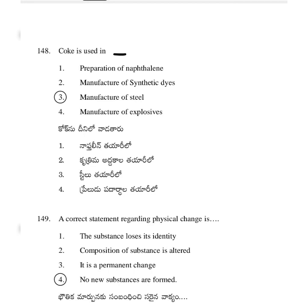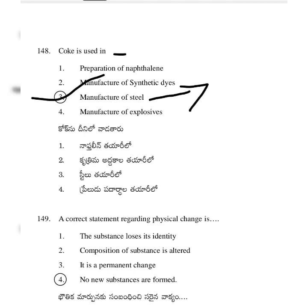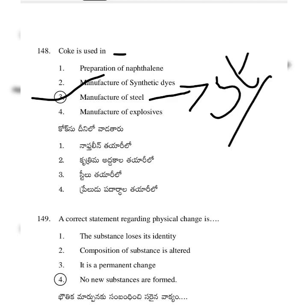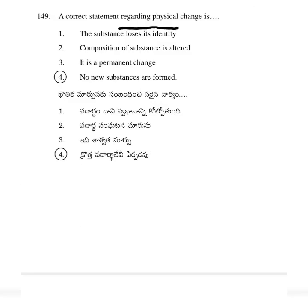Coke is used in the manufacture of steel — option 3.